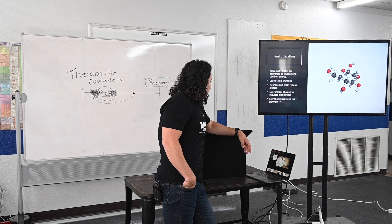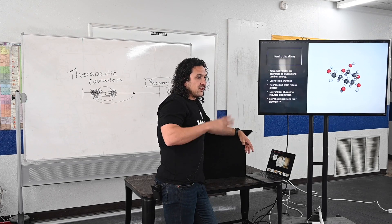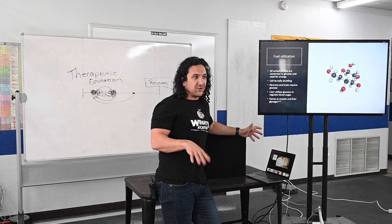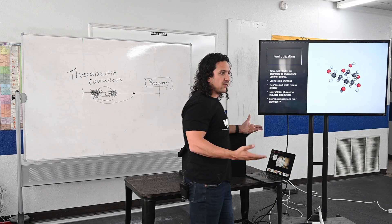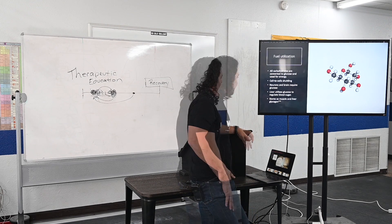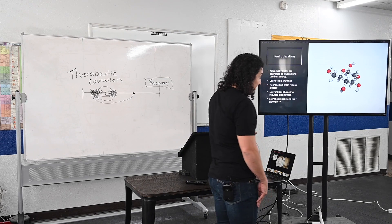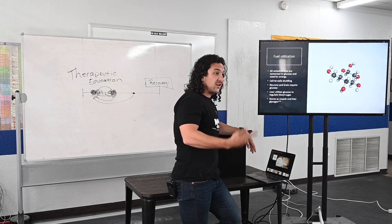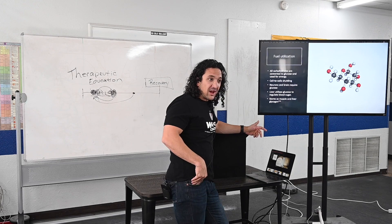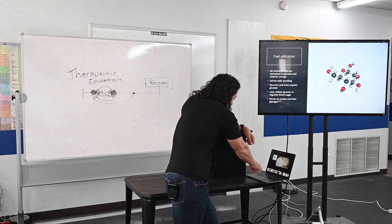The liver utilizes glucose to regulate blood sugar. It can constantly convert glucose to keep your blood sugar level stable — it's your main regulator of glucose homeostasis. The liver has an almost infinite ability to continue producing glucose to keep your blood sugar level stable so you don't die.